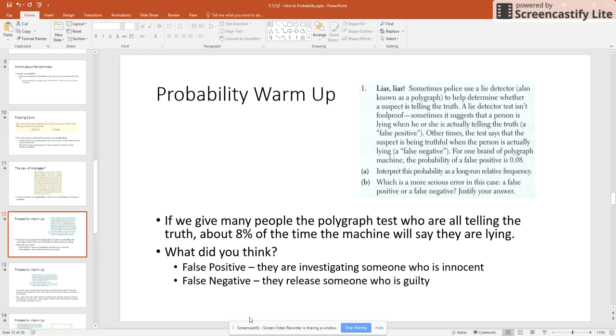So let's look at this example here. Sorry that the answers are already up there for you. Liar, liar. Sometimes people use a lie detector polygraph to help determine if the suspect is telling the truth. A lie detector test isn't foolproof. Sometimes it gives those false positives. Other times it gives them a false negative. The probability for this particular brand of polygraph machine is a false positive of 0.08.